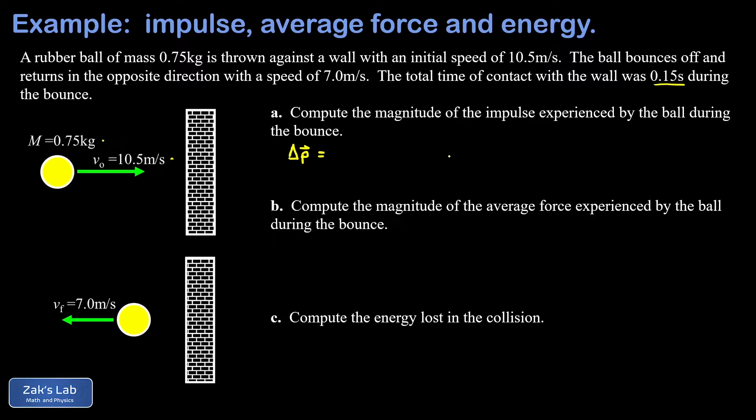The 10.5 we'd normally call a positive velocity giving positive momentum, and the 7 we can call negative velocity giving negative momentum. We write down the change in momentum as final minus initial, so p final vector minus p initial vector.